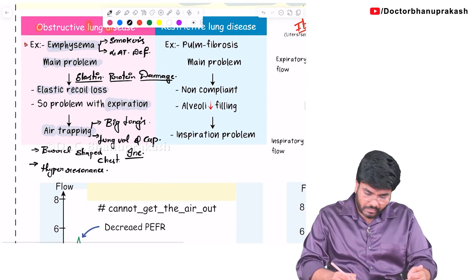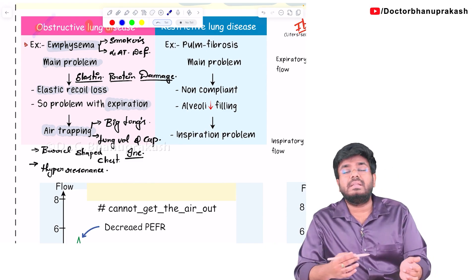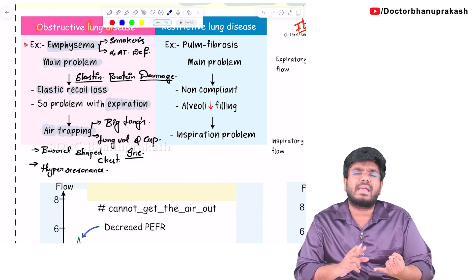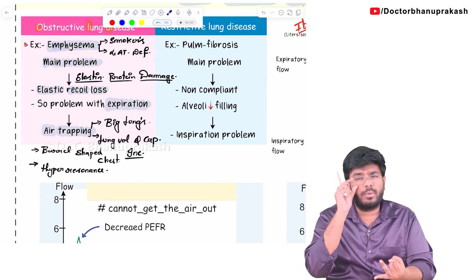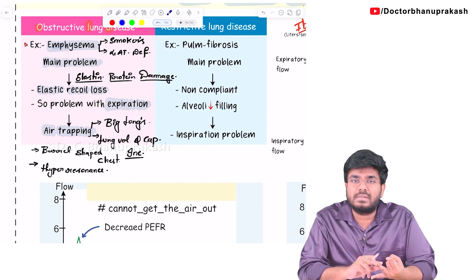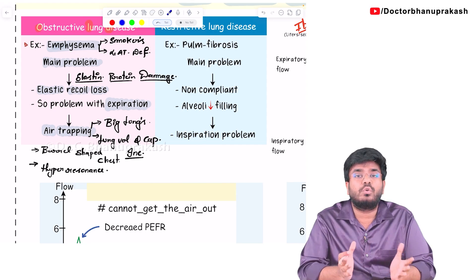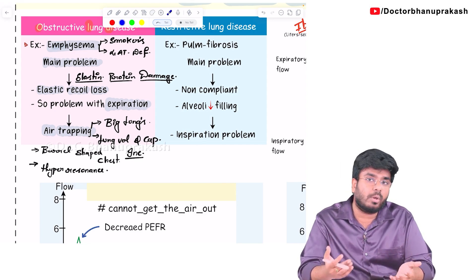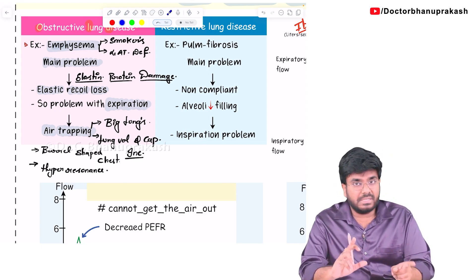So to summarize what we've completed about obstructive lung disease: the classical example is emphysema; the problem is damage to elastin protein; elastic recoil decreases; there is air trapping resulting in large voluminous lungs; it's an expiratory problem; and lung volumes and capacities are increased.